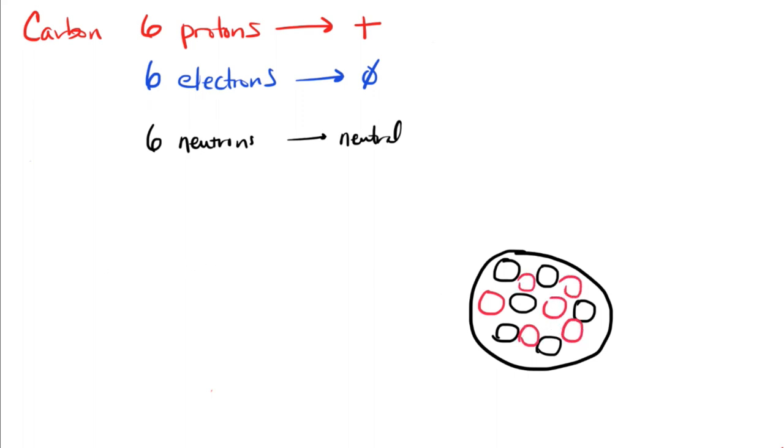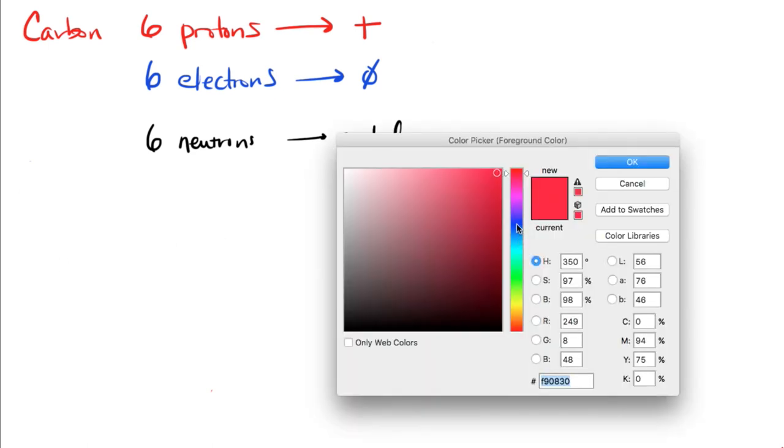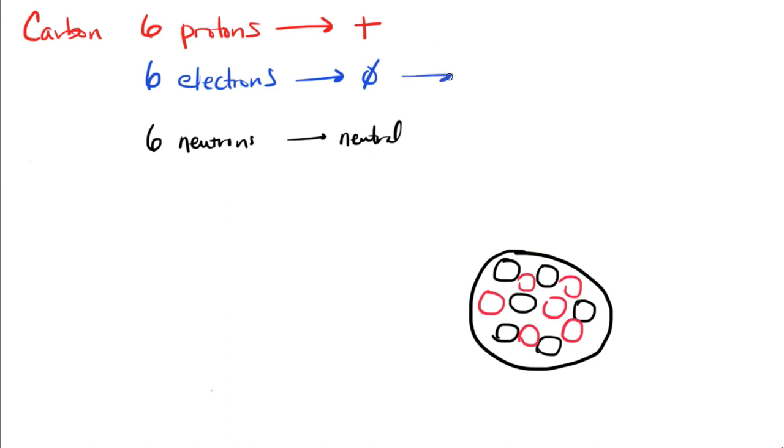Now the electrons, on the other hand, are not found in the core of the atom or in the nucleus. They're actually in constant motion. Remember that these we said were extremely small and they are in constant motion around the atom. So the electrons, we say that they occur in orbitals. And these are just the likelihood of where they may exist at any given time because they're in constant motion. So I'm going to draw this first energy shell or orbital.